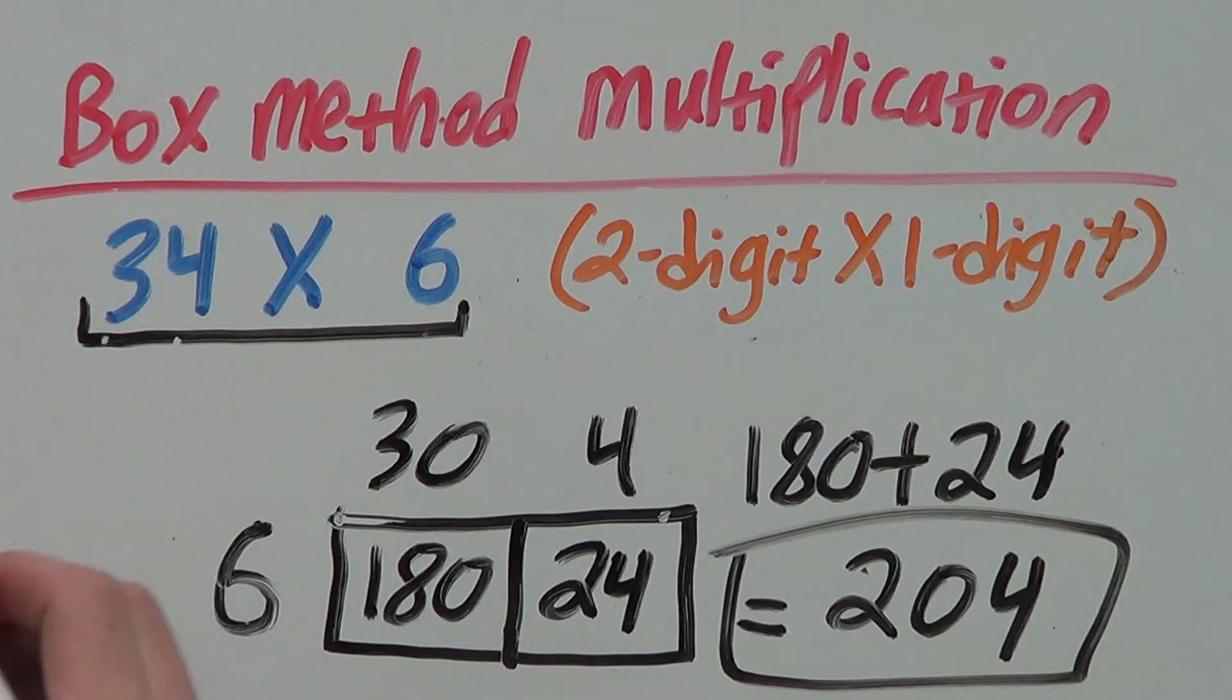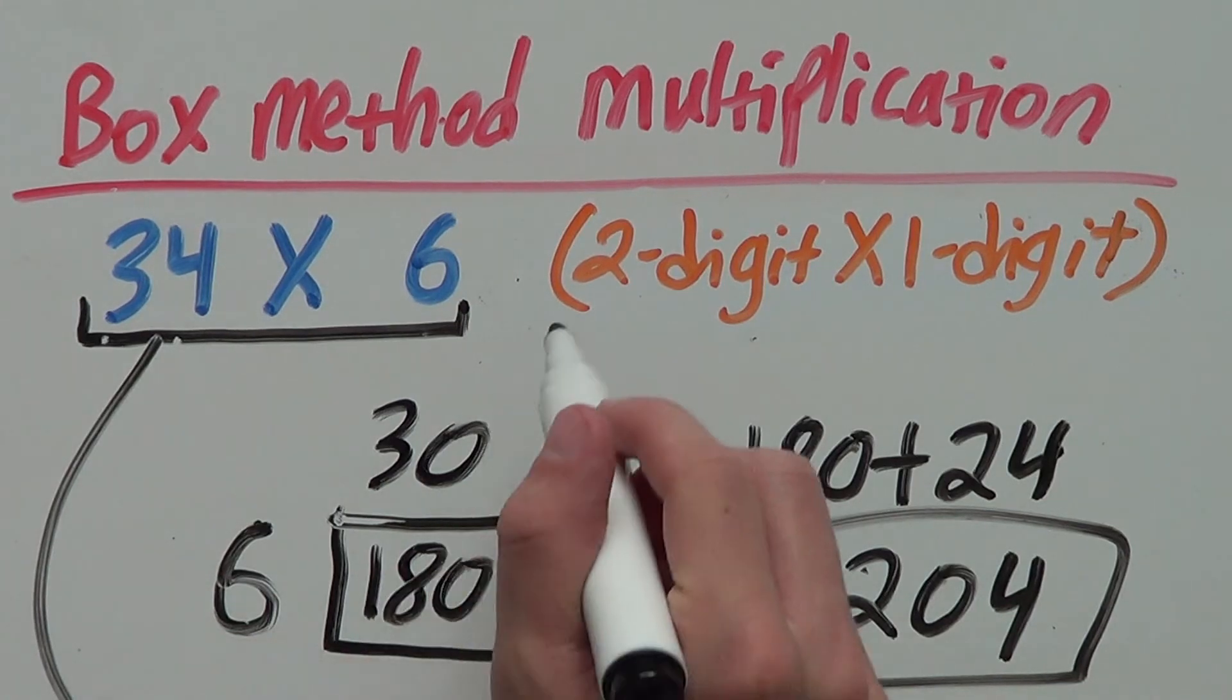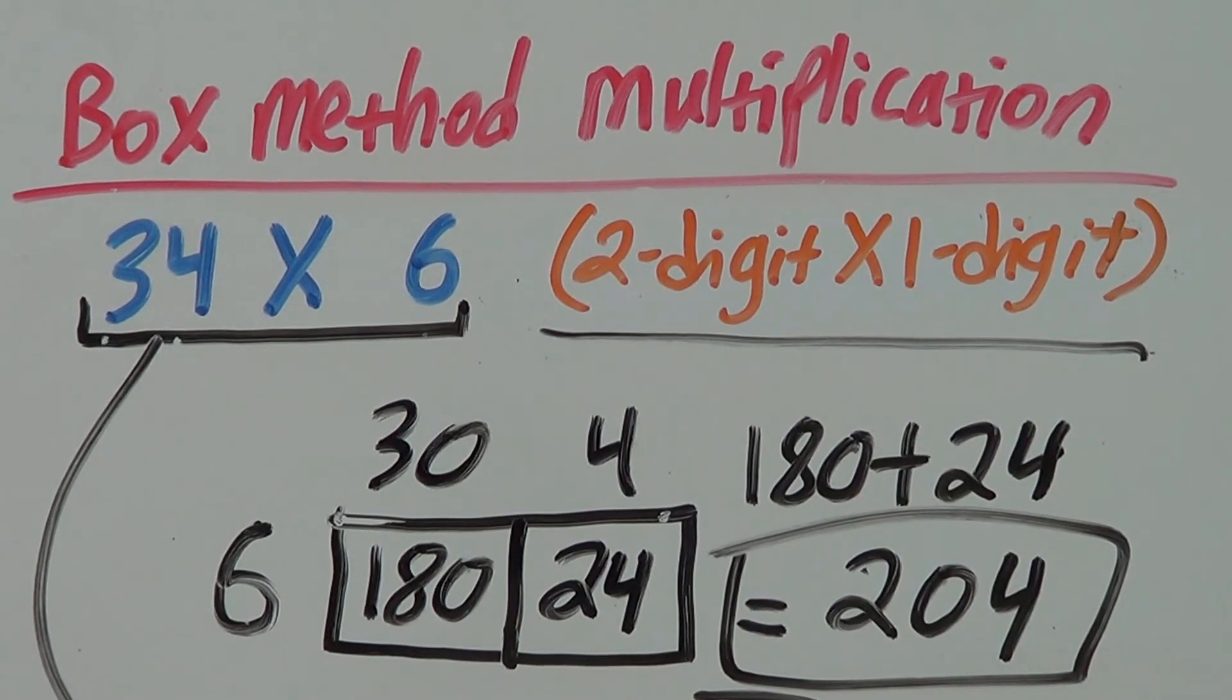So, 34 times 6 is 204. And, that is how you do box method multiplication with a 2 by 1 digit box.